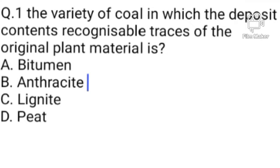Question number 1. The variety of coal in which the deposit contains recognizable traces of the original plant material is: Option A: Bitumen. B: Anthracite. C: Lignite. D: Peat. Option D is the correct answer.